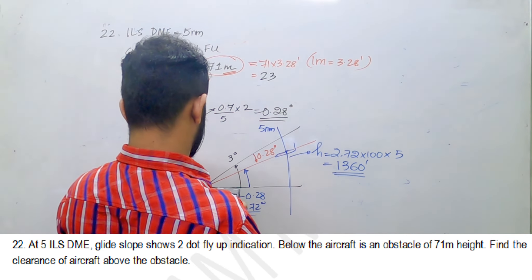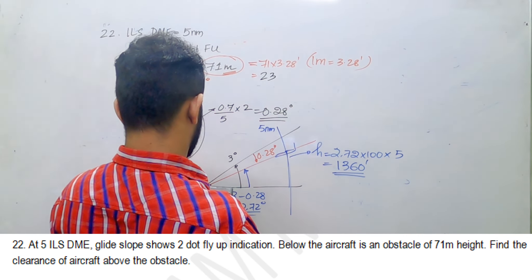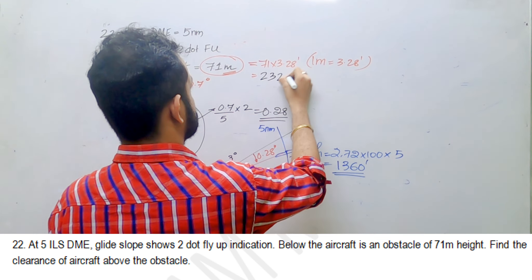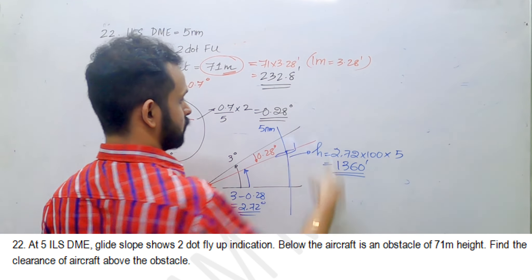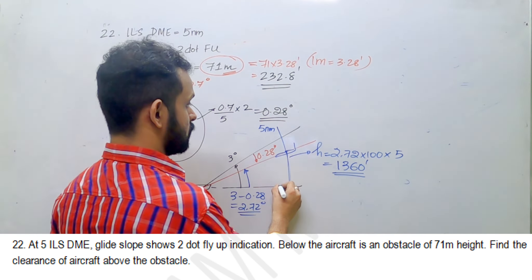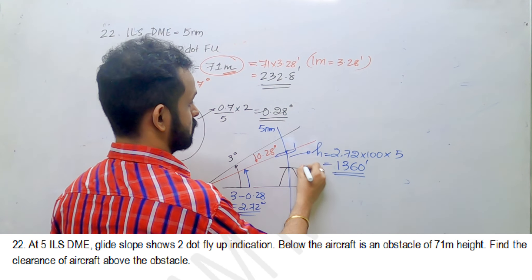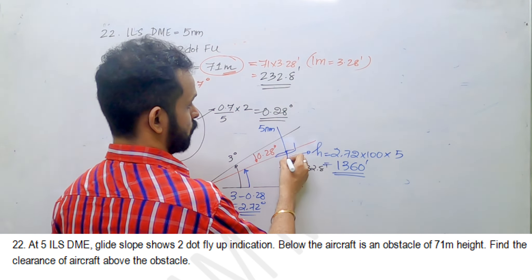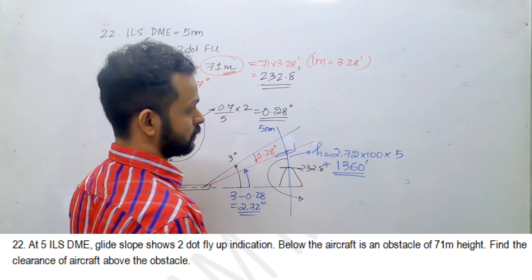It's 232.8 feet so we definitely have a clearance here. There's an obstacle which is of height 232.8 feet. Therefore what is the clearance of the aircraft?